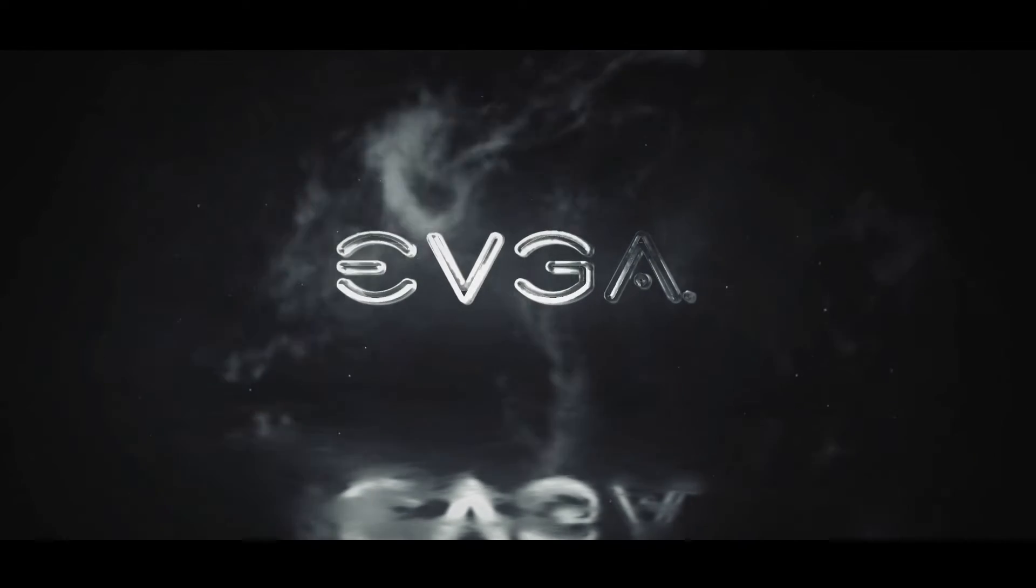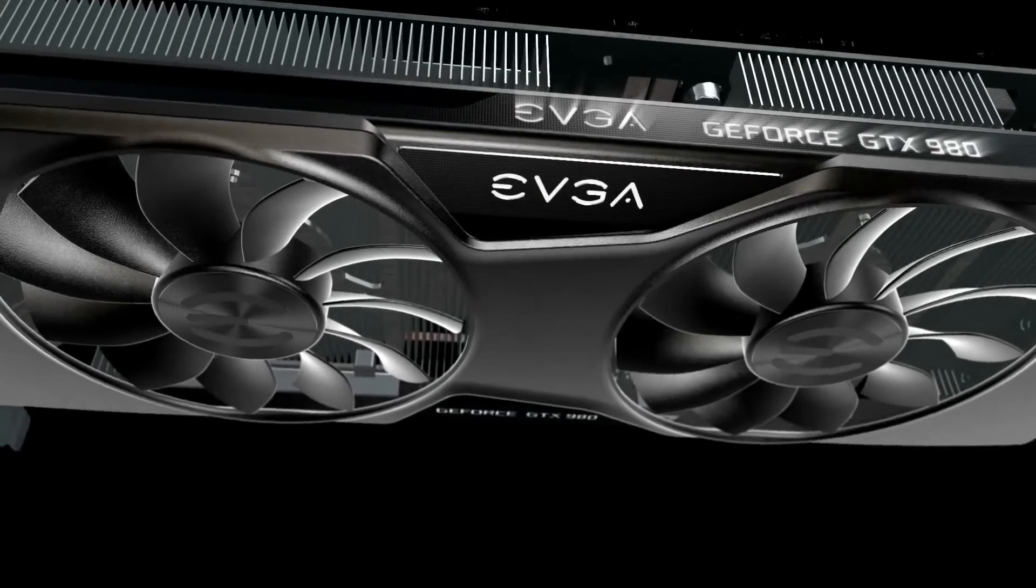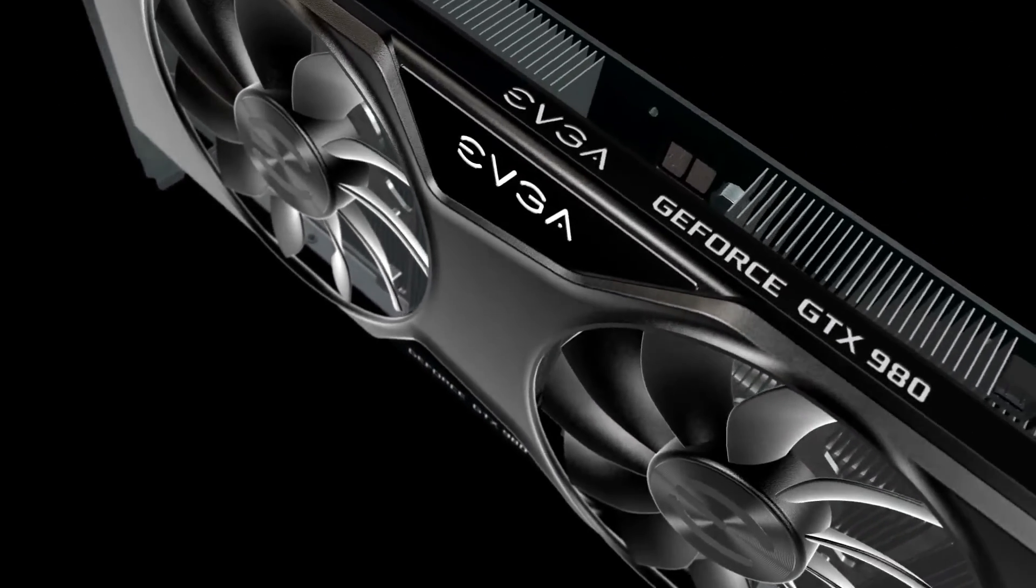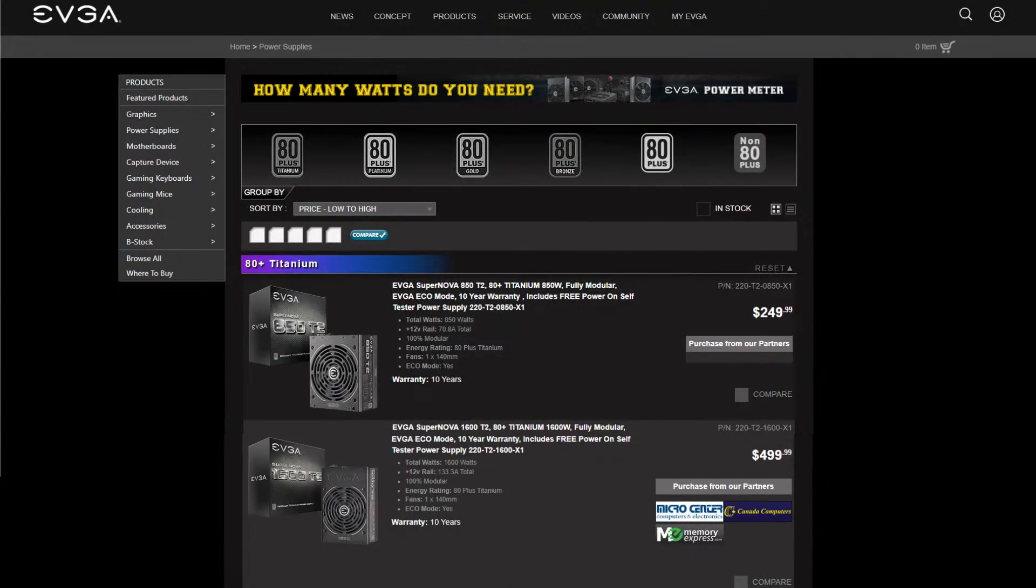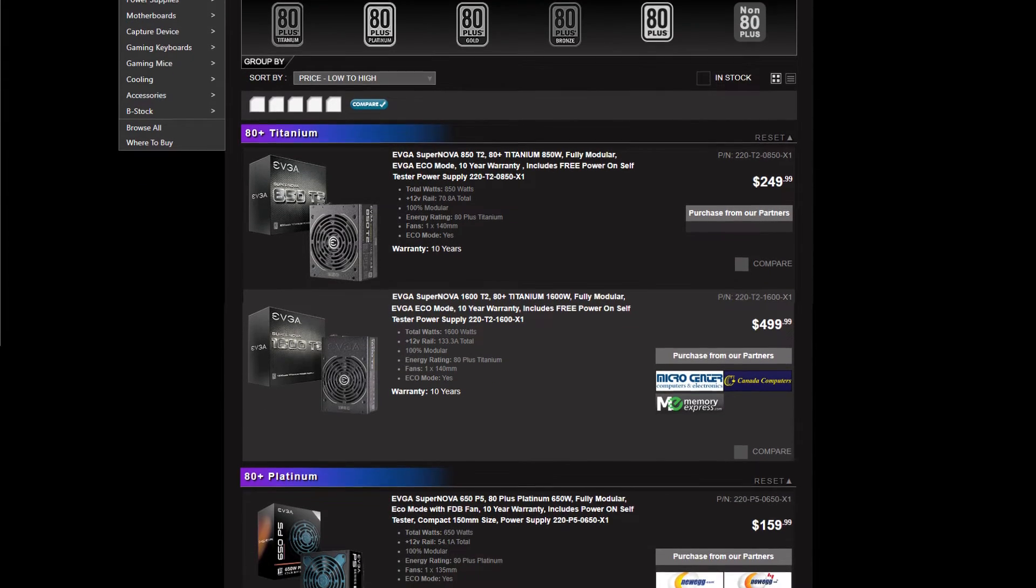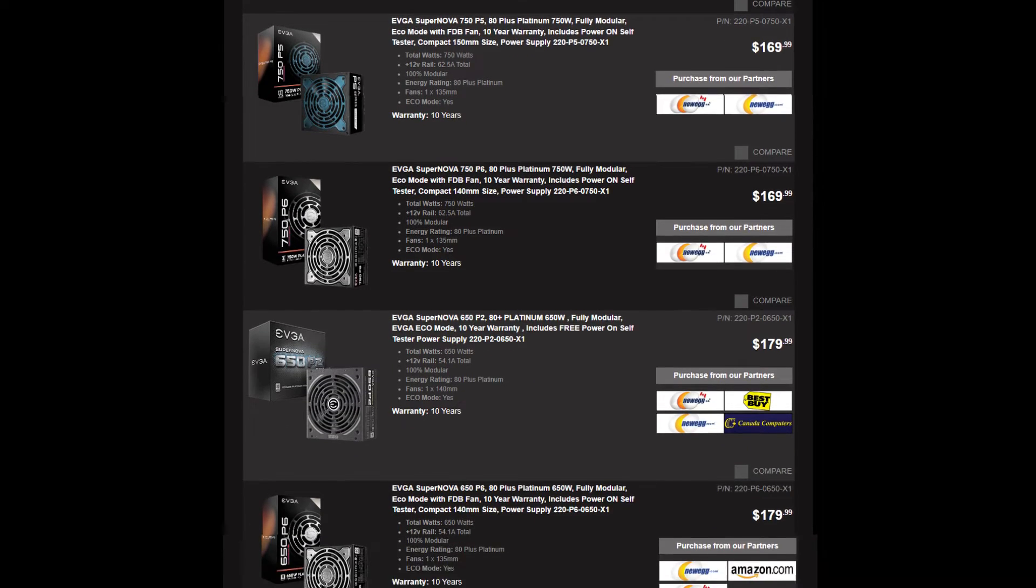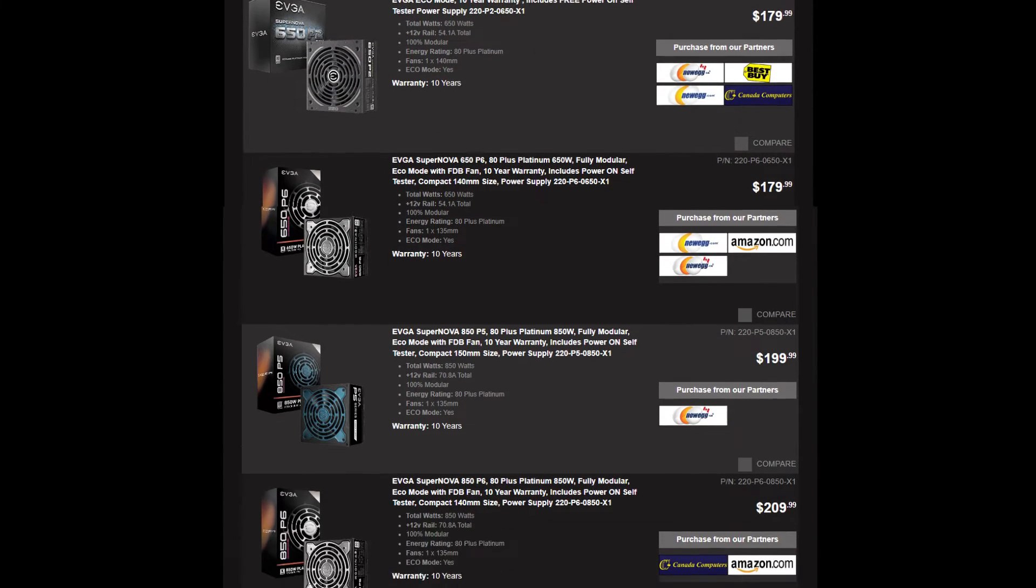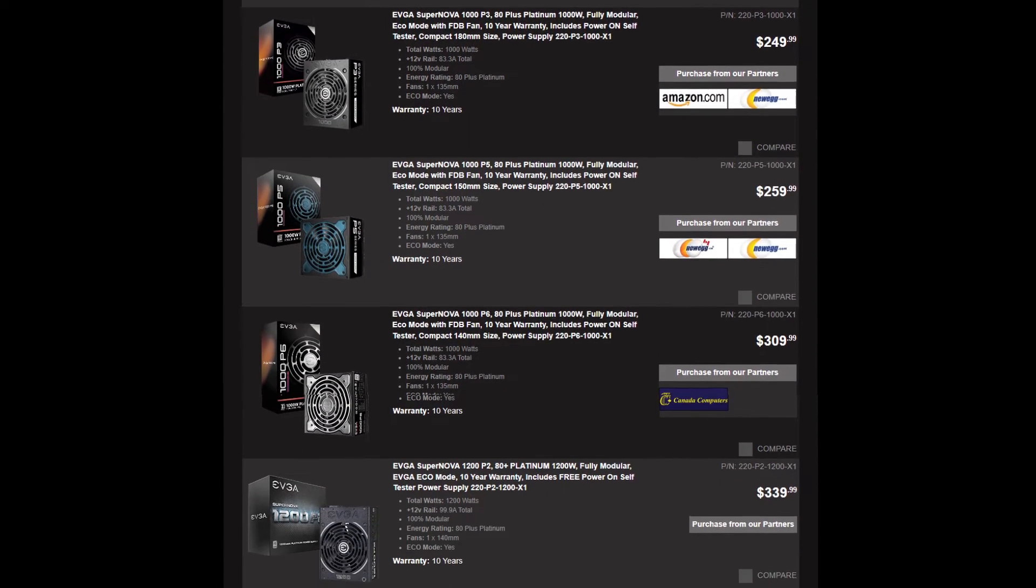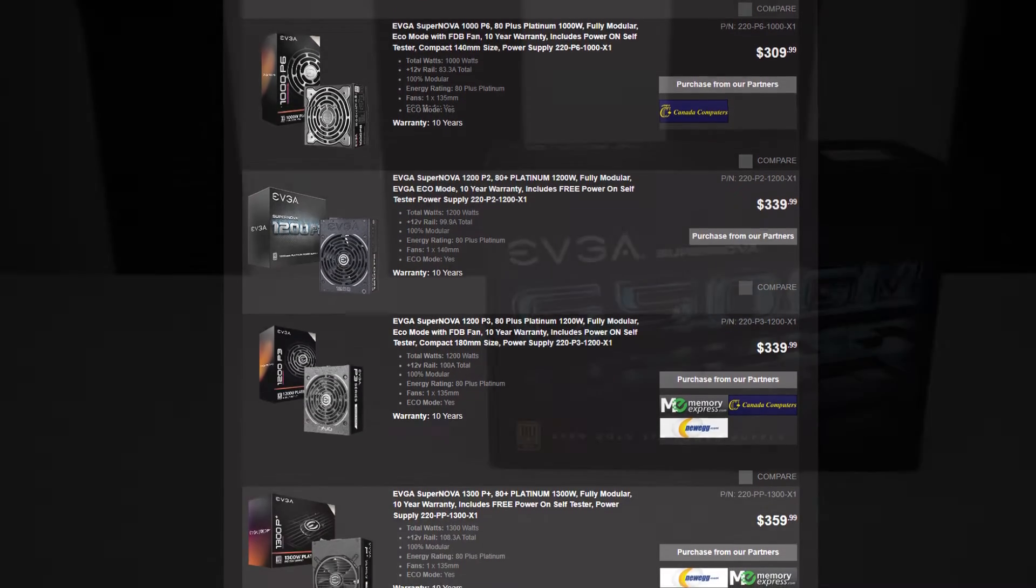Number 2: EVGA. EVGA is another well-known brand in the gaming PC space. Founded in 1999, EVGA started as a motherboard and GPU company but has since expanded to producing PSUs and a variety of other PC components. Like the majority of brands featured in this video, EVGA is also a reseller, outsourcing their PSUs from different companies. Still, over the years, EVGA has gained and maintained an excellent reputation, with most of their PSUs being highly reliable and quality products that deliver top-quality at affordable prices.